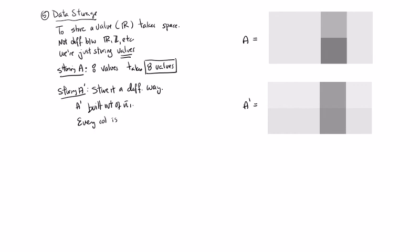Remember that A prime is built out of a single u1. Every column is a multiple of u1. This first column is some c1 times u1, this is c2 times u1, this is c3 times u1, this is c4 times u1.